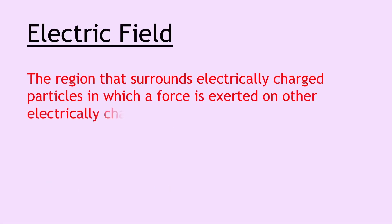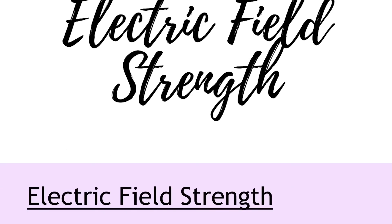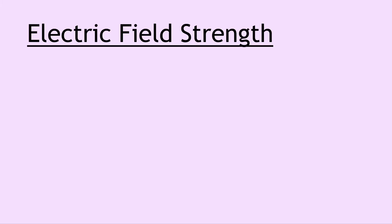Firstly we have electric field. This is the region that surrounds electrically charged particles in which a force is exerted on other electrically charged particles. Remember that an electric field will exist around any point charge. Next we have electric field strength and this is the electrical force per unit positive charge. This can be seen from the equation F equals QE that you get on the relationship sheet in the exam. So if you rearrange that for the electric field strength E you get F divided by Q, which is simply your electrical force divided by your positive charge Q. The reason we talk about positive charge here is because when we're talking about electric field lines, we always talk about the field lines going in the direction that a positive charge would move in if placed in that field.